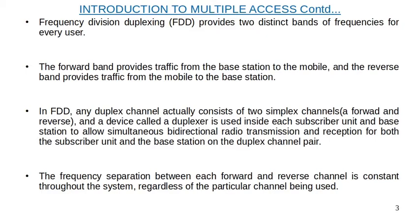In the FDD scheme, we have two frequencies in this duplex channel — one for forward communication and one for reverse communication. The two frequencies are transmitted simultaneously on the subscriber side, and a duplexer is used to separate the forward and reverse channels. The frequency separation between each forward and reverse channel is constant throughout the system.